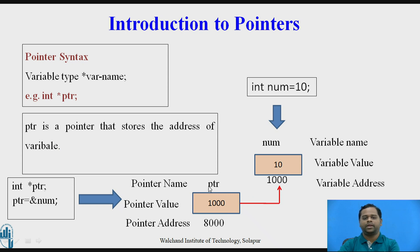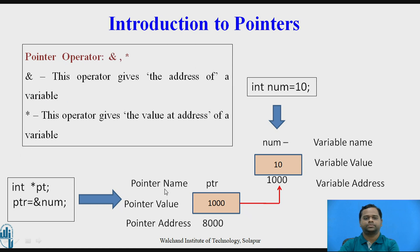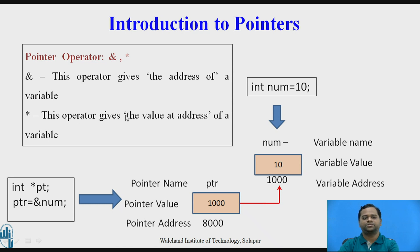So here ptr is the pointer name, 1000 is the pointer value, and 8000 is the pointer address. The two operators frequently used with pointers are ampersand (&) and star (*). The ampersand operator gives the address of a variable, and the star operator gives the value at the address of a variable.